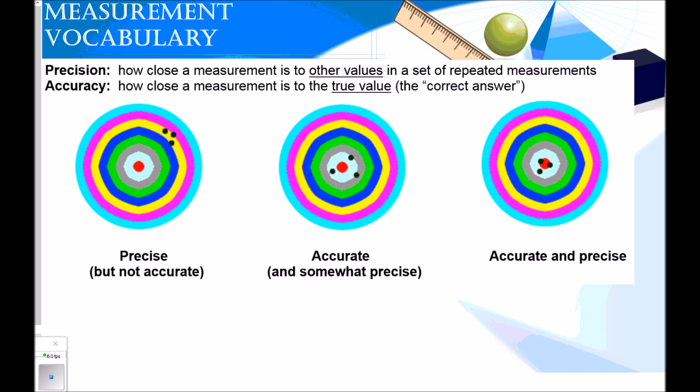Some of the vocabulary I need you to know are the differences between precision and accuracy. Precision is how close the measurement is to other values in a set of repeated measurements. Accuracy is how close the measurement is to the true value or the correct answer. I'm going to use bullseyes in order to give an analogy or an example of what precision and accuracy are.